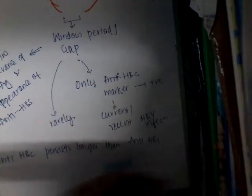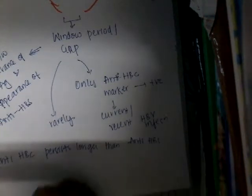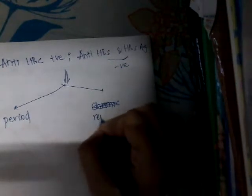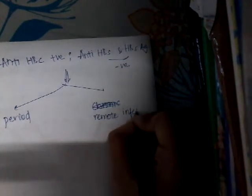If anti-HBc is positive and both anti-HBs and HBsAg are negative, this can be one of two scenarios: it can be in the window period, or it can be a remote infection — meaning the infection occurred long back. To differentiate these, you should test whether it is IgM or IgG anti-HBc.